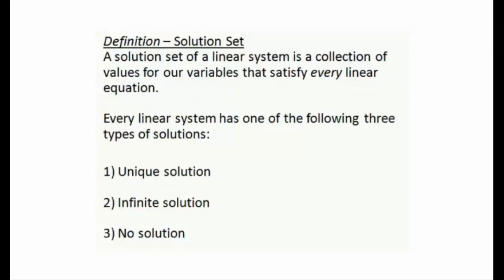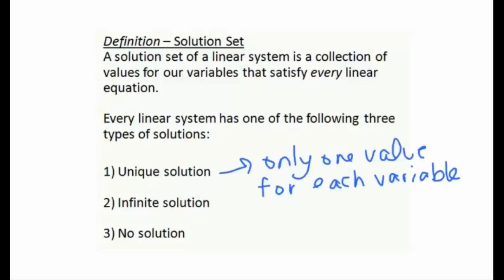Inside this lesson we're going to take a look at what are called solution sets for linear systems. A solution set is a collection of values that satisfies every single linear equation inside our linear system. When we solve a linear system there are three different possibilities for our solution set. The first is a unique solution, meaning there's only one value for each variable.